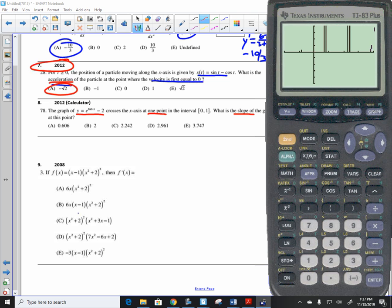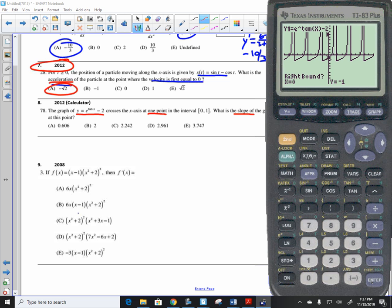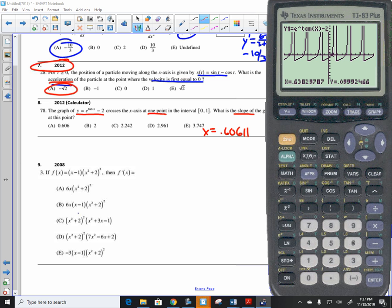It crosses at one spot. I must have a weird graph going on here. I'm going to zoom standard and get back to normal graph. Sorry about that. It says it crosses the x-axis between 0 and 1. I'm going to find that spot. I can see it right there. The way I find that is second calculate 0. I'm going to find that spot. Left bound, right bound, enter. So, it turns out that it happens that x is equal to .60611. The question is, what's the slope of the graph at that spot?